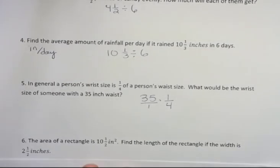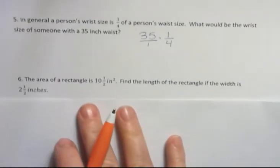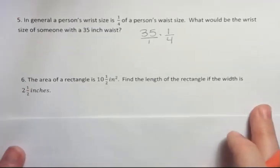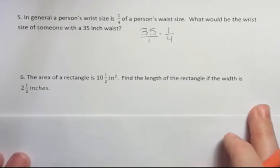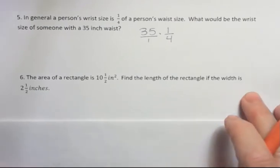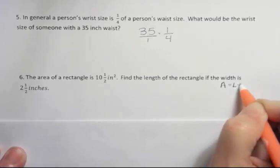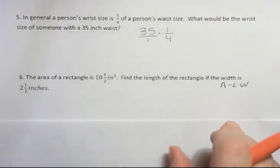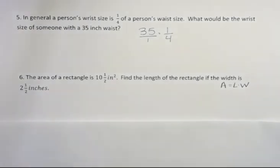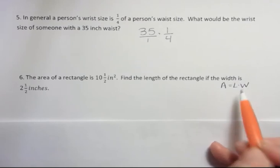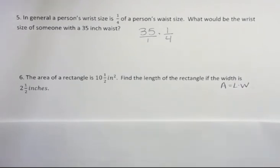And the last one, the area of a rectangle is 10 and a half inches squared. Find the length of the rectangle if the width is two and a half inches. Well, first of all, we have to know that area equals length times width. So that if we know the area, we should be able to reverse that formula by dividing the area by one of these and we should get the other one. So it's actually a division problem.